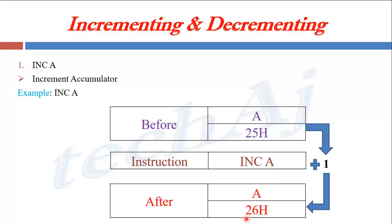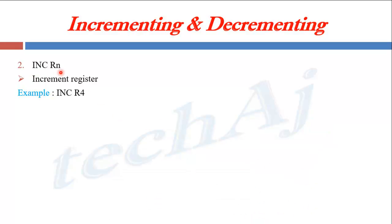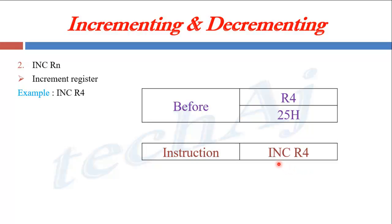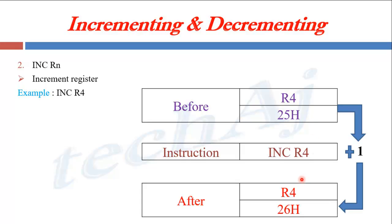Similarly, INC Rn — here Rn can be any register R0 to R7. This instruction will increment the value of the register. Suppose initially register R4 has the value 25H. When we execute INC R4, the value of R4 will be incremented so that R4 will become 26H.